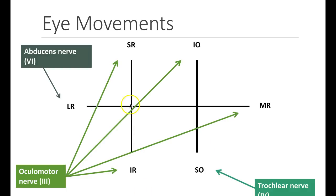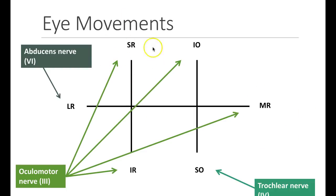Each of these muscles has a unique function. This is a schematic of the eye muscle movement for the right eye. The lateral rectus tends to pull the eye to the right, and the medial rectus moves it to the left or medially. The superior rectus elevates the eye when the eye is in abduction, and the inferior rectus depresses the eye when in abduction. In adduction, it is the inferior oblique that elevates the eye, and the superior oblique that depresses the eye.